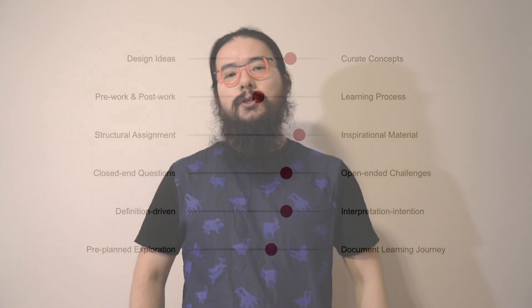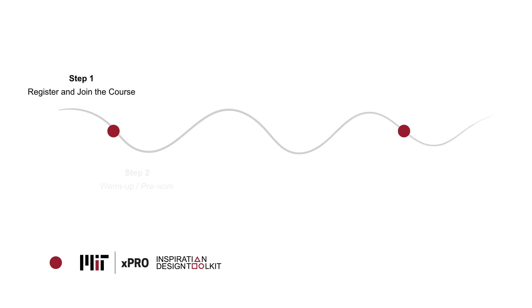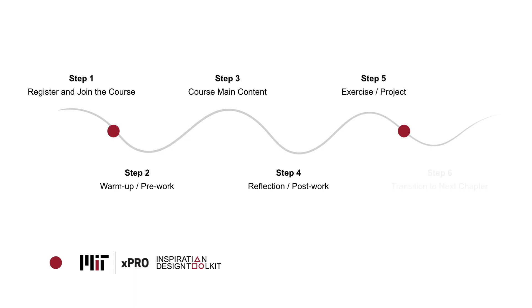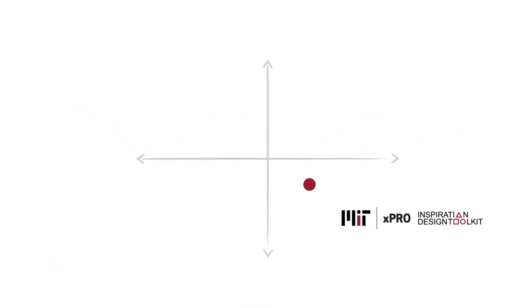If you view this class as a learning journey, we break it into six steps. We really want you to use the toolkit before wrap-ups and before transitions to the next chapter, to help you better understand the content of the class and inspire you to think beyond it. If you place this toolkit in a 2x2 diagram — online versus offline, reflective learning versus creative making — the toolkit should be a bridge for both dimensions. We encourage you to print out the materials, either on paper or on your phone, to carry with you as inspiration materials.